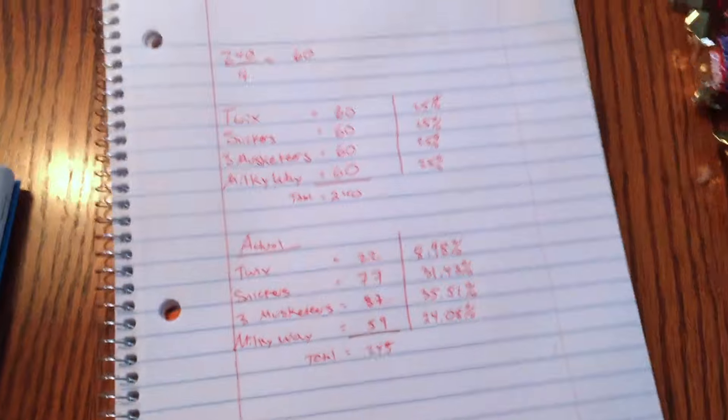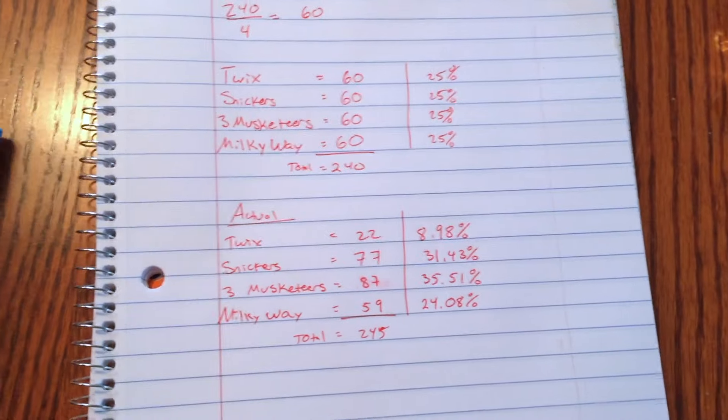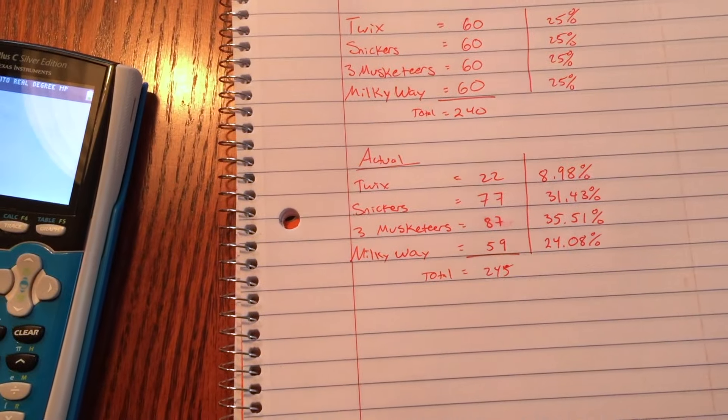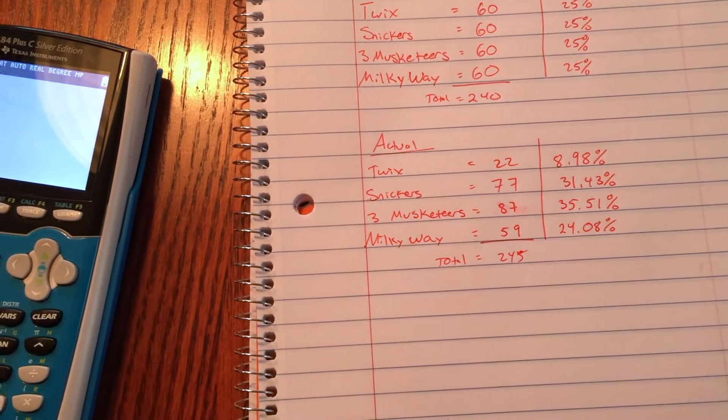So the numbers are in, and here we can see that I was correct. Twix is a lot less in the percentage. So if you look here, we can see that there's a total of 22 Twix, 77 Snickers, 87 Three Musketeers, and 59 Milky Ways.